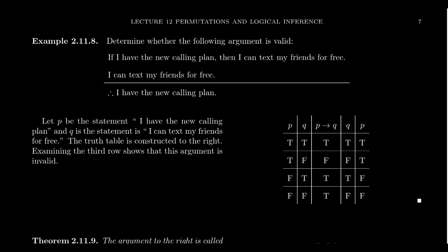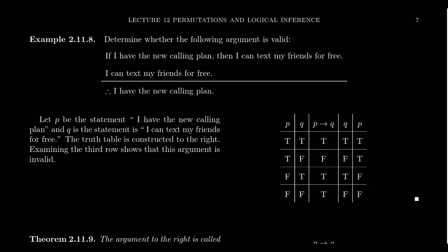If an argument is invalid, then it is a logical fallacy. In this video, I want to present the two most common logical fallacies that come from invalid arguments — that is, where the truthfulness of the premises doesn't guarantee the truthfulness of the conclusion. Let's give an example of such a one.